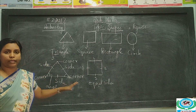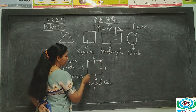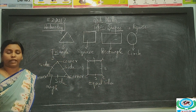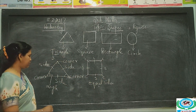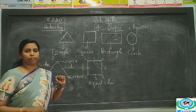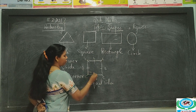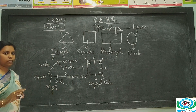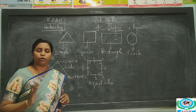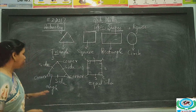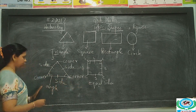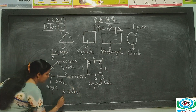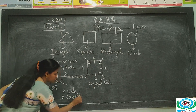A square also has corners — four corners. And it has four angles. For your class level, you will focus on the sides and corners. Comparing triangle and square: a triangle has three sides and three corners, while a square has four sides and four corners.